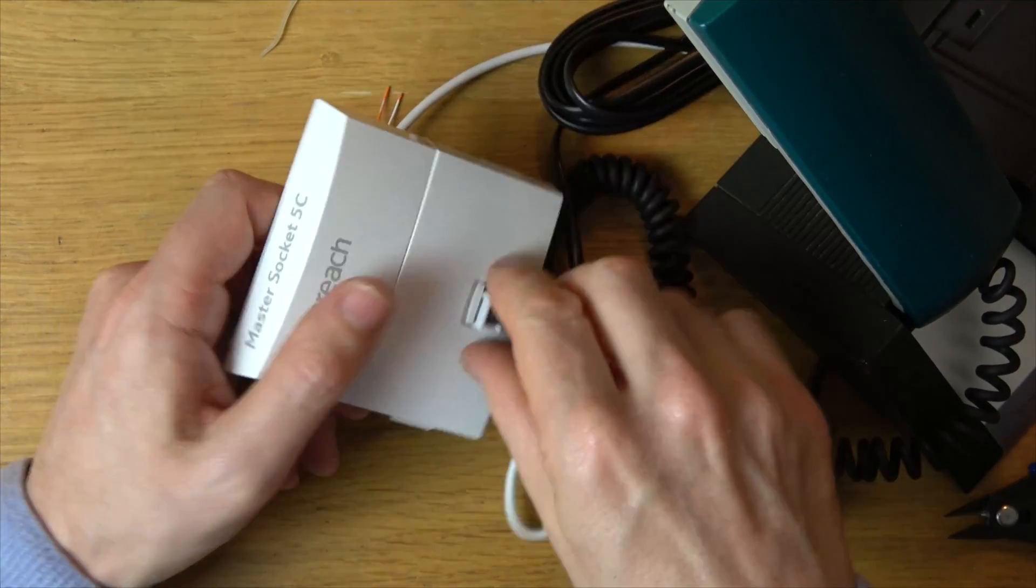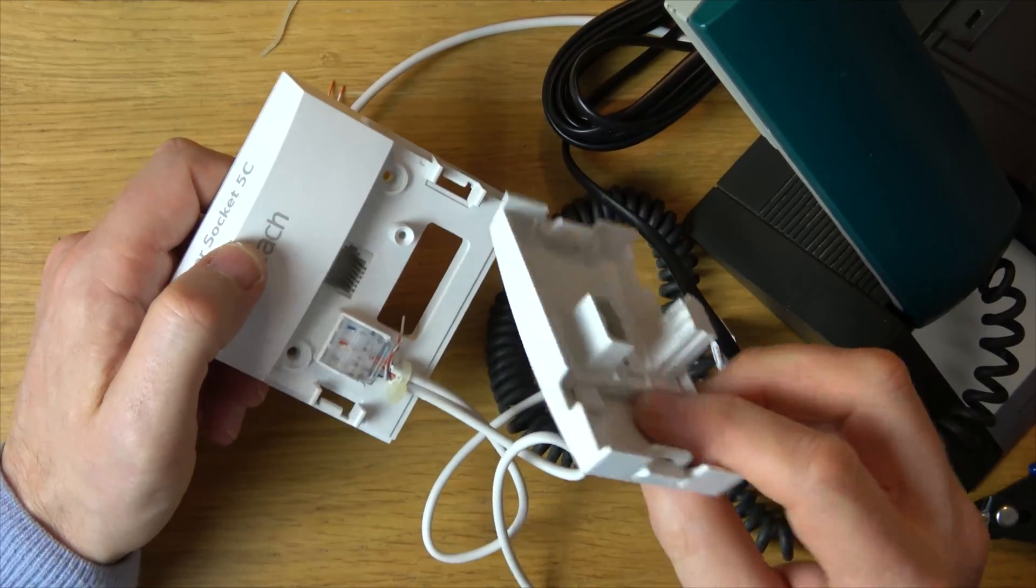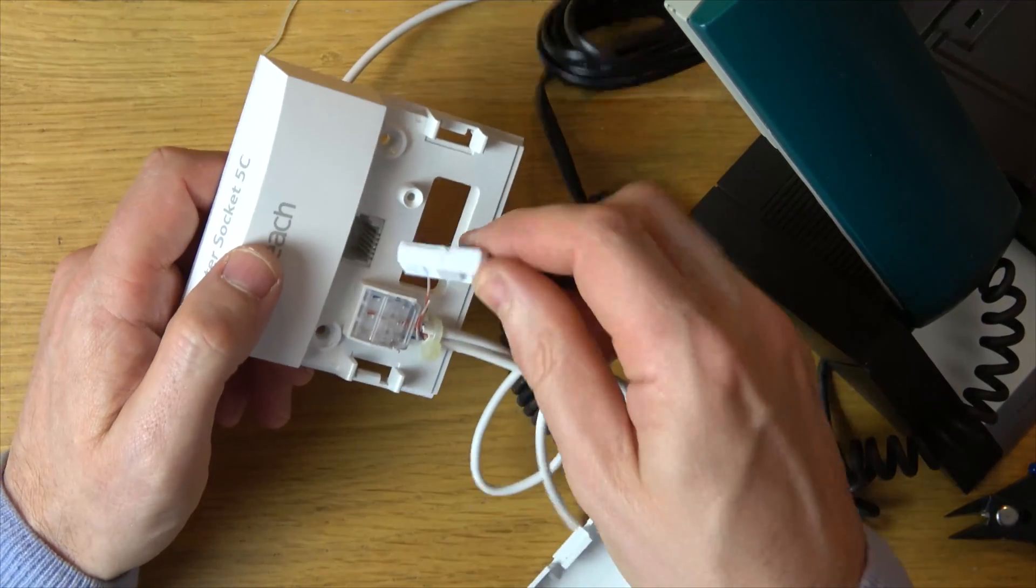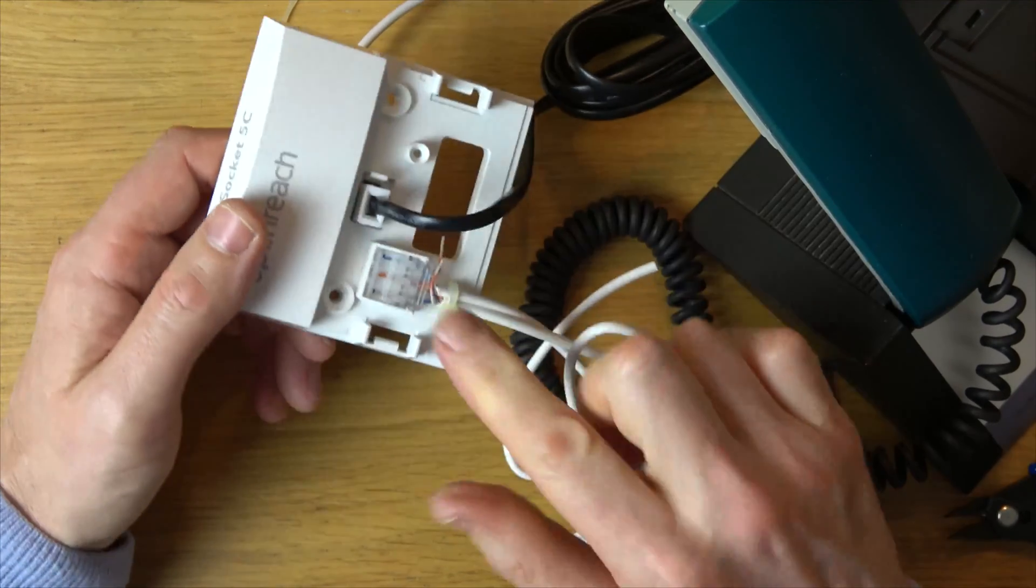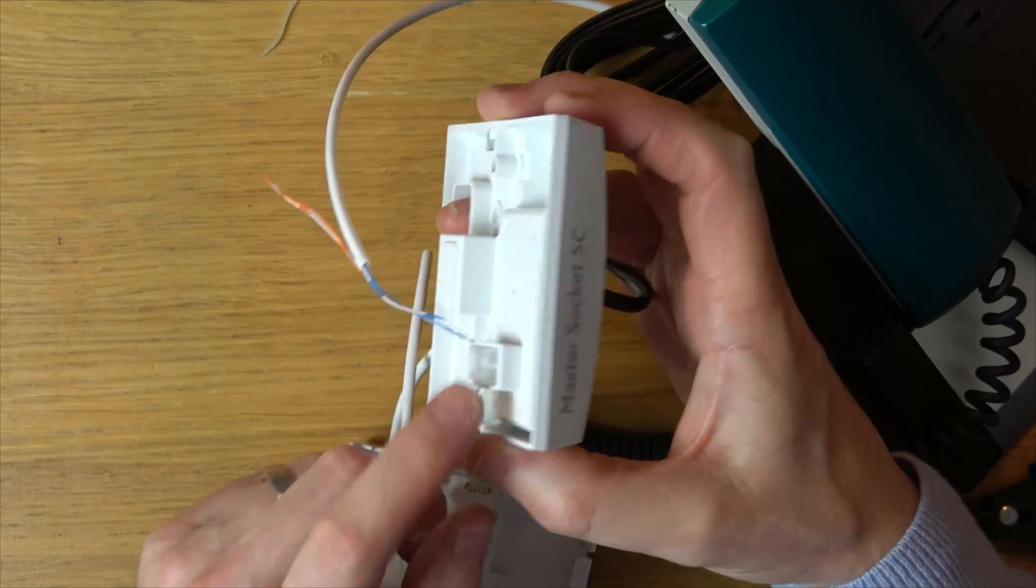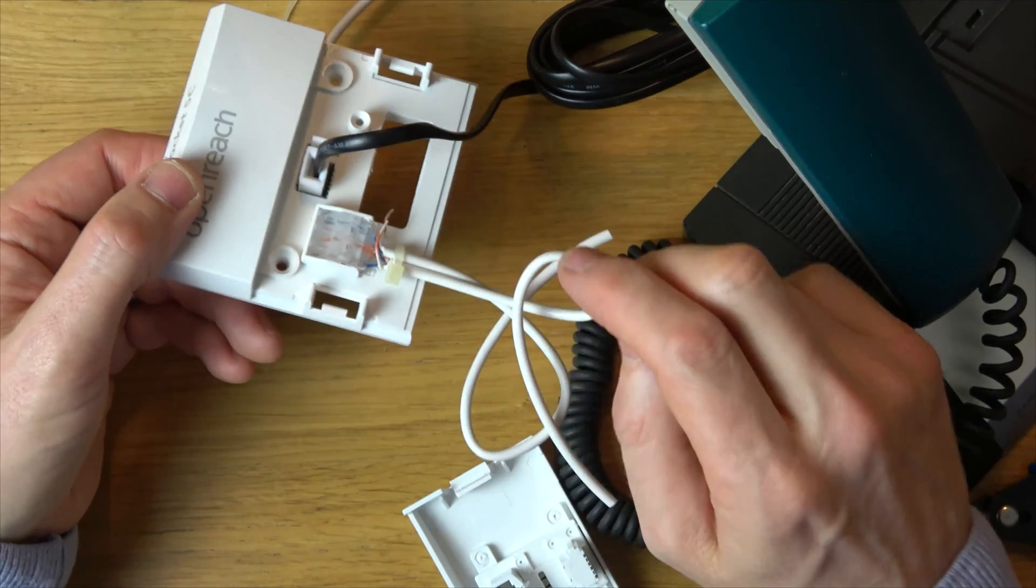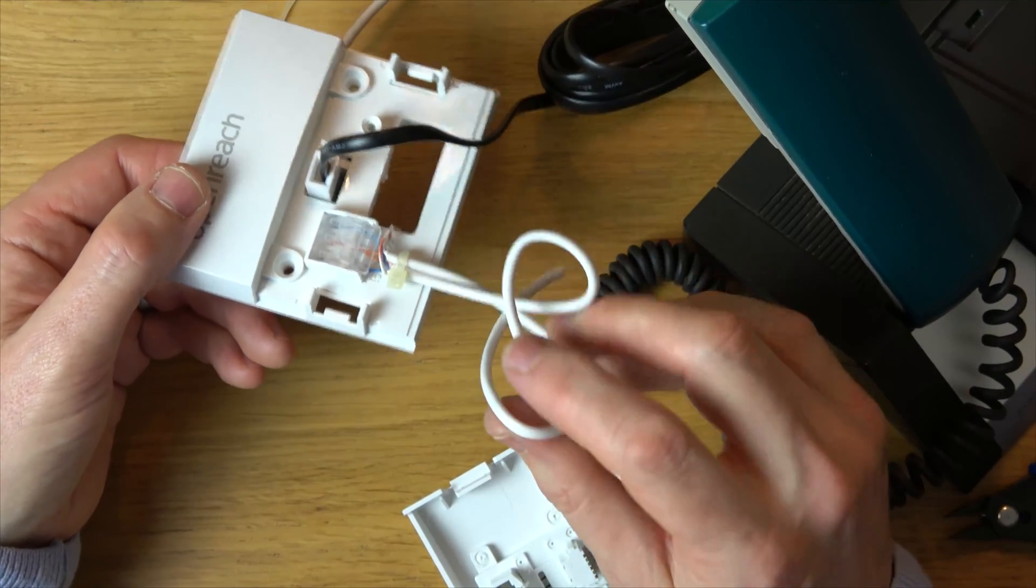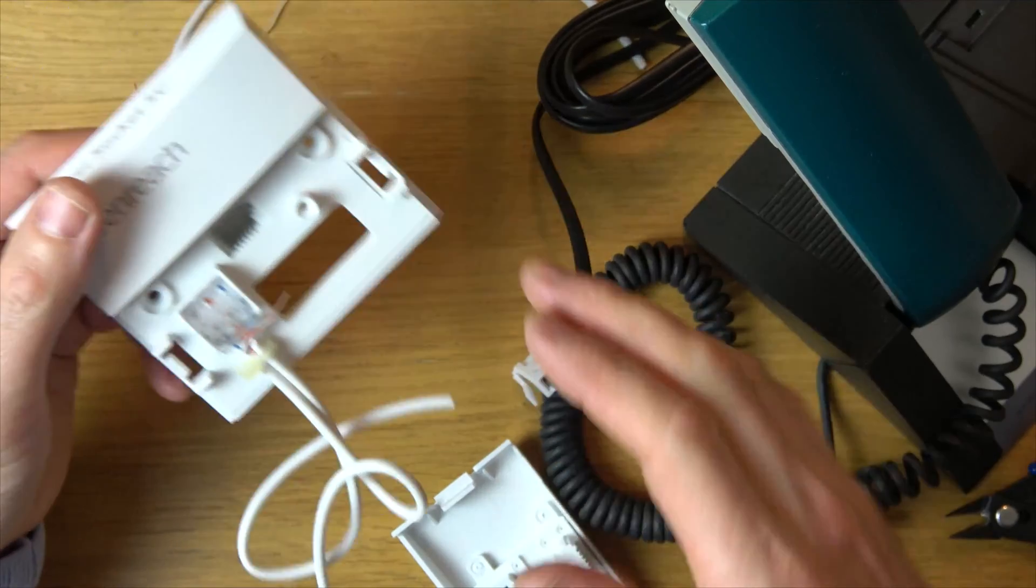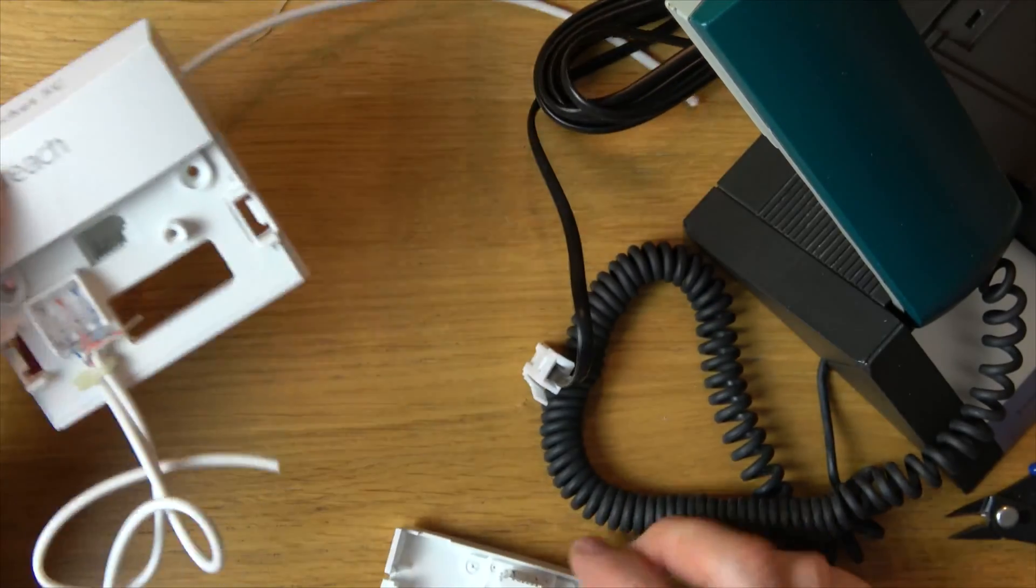Now if you ever have a fault in the future, all you have to do is pinch here and here, take off this front plate. This will now disconnect the telephone extensions and you plug the phone directly into the back here. If it works here you know the incoming line is okay, and you have a fault internally, in which case you need to fault find your internal extensions. It's a nice demarcation between the line coming into the property and the internal extensions.